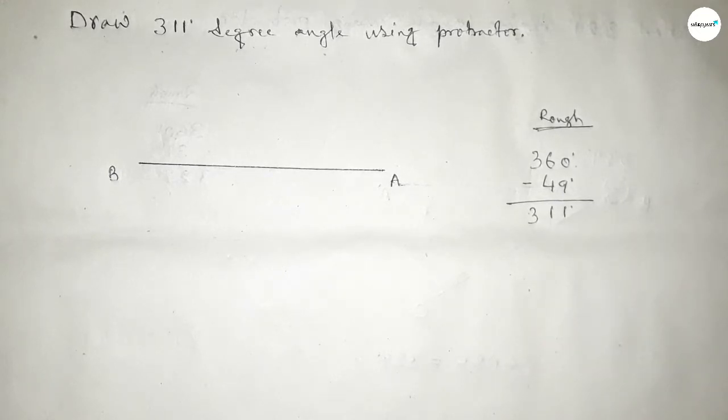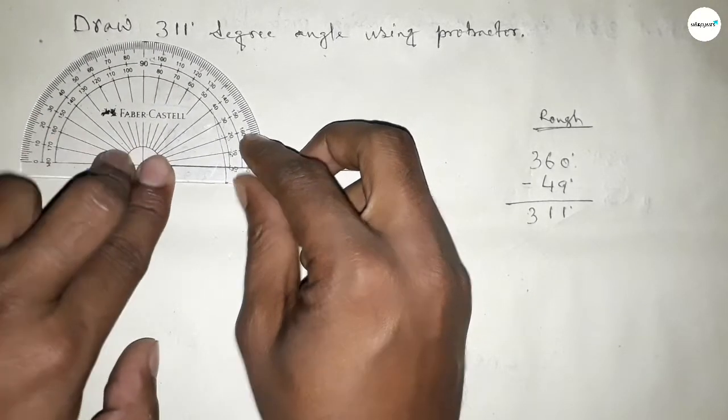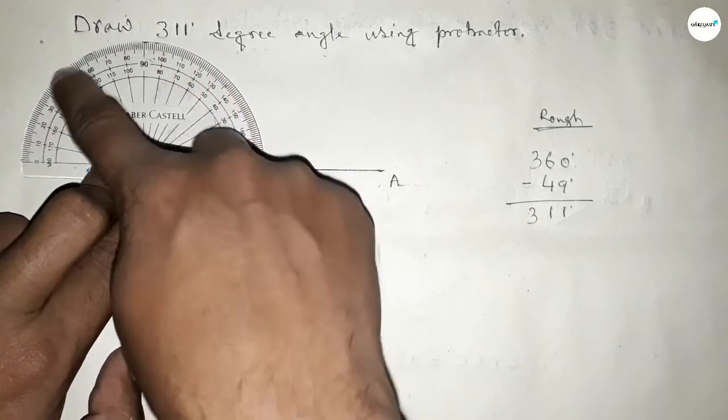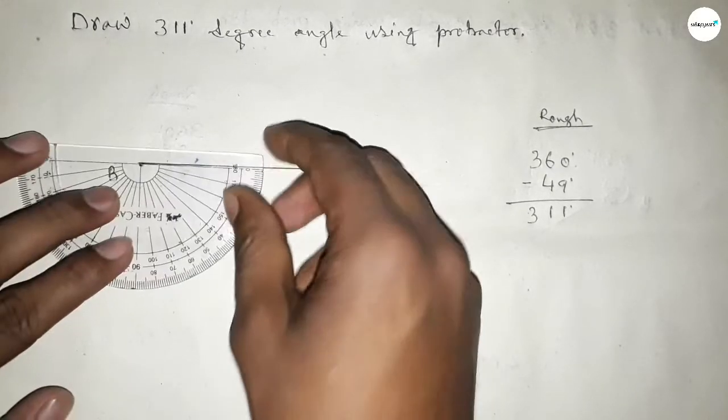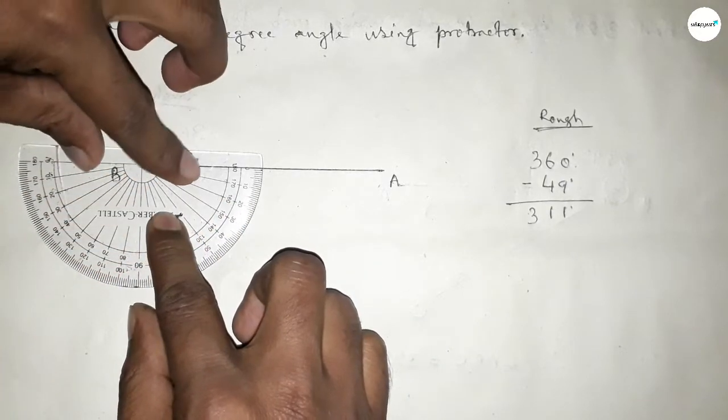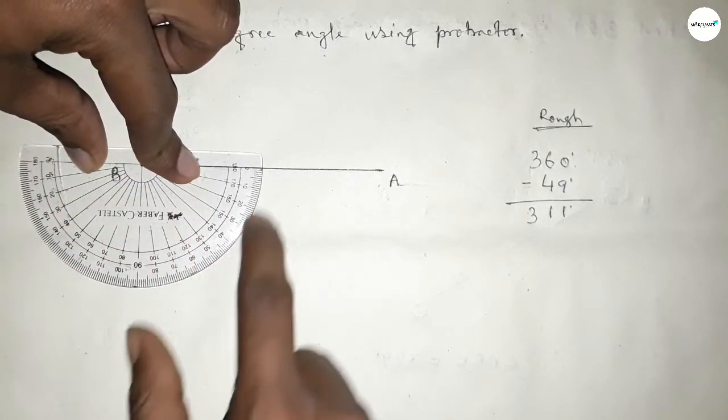So first counting 360 degree angle, so putting the protractor on the point B by this way and counting angle. So this is 180 degree. Plus putting the protractor on the point B by this way and counting the angle, so from this total 360 degree angle.